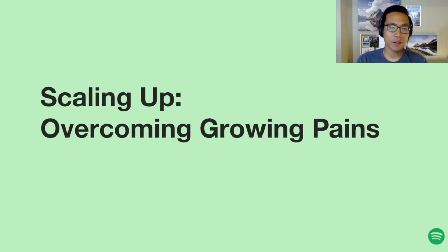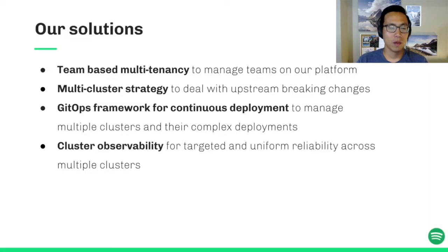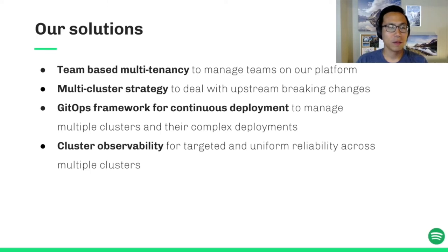Jonathan and I are going to talk about the challenges we were facing while we scale up our platform and how we address those challenges. More specifically, we are going to cover how we support a growing number of ML teams on our platform to allow them to operate in isolated and self-manageable environments. Second, how we deal with upstream breaking changes by using the multi-cluster strategy. Then we'll cover our GitOps framework for continuous deployment to manage multiple clusters and complex deployments. In the end, we'll talk about cluster observability for targeted and uniform reliability across multiple clusters.